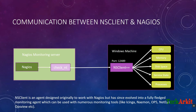Every five minutes, check_nt asks the NSClient: what is your CPU, memory, and disk space — whatever commands or status you have defined on the Nagios server. It pings the NSClient and asks for the status, then NSClient executes those plugins on the local machine and returns the status to the Nagios server.